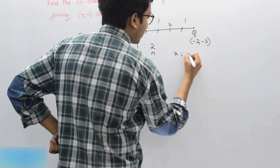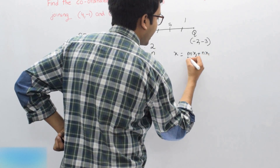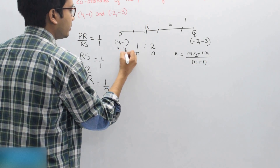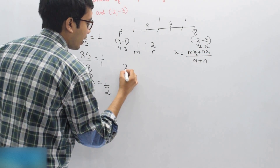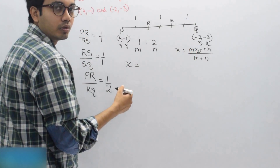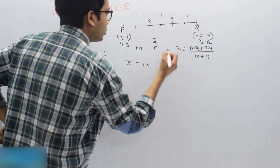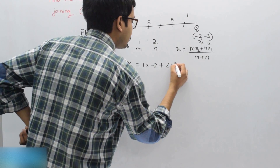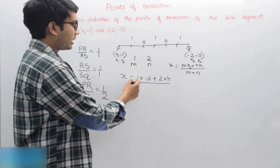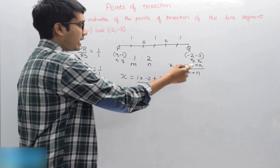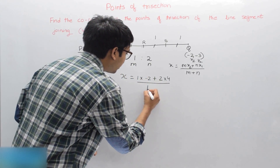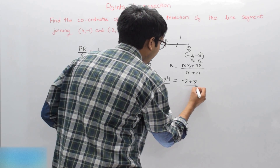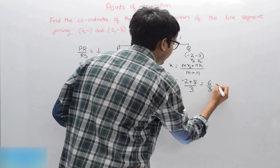Applying the section formula: x = (M·x₂ + N·x₁) / (M + N). Taking P as (x₁, y₁) and Q as (x₂, y₂), we get x = (1 × (-2) + 2 × 4) / (1 + 2), which equals (-2 + 8) / 3, which equals 6/3 = 2.